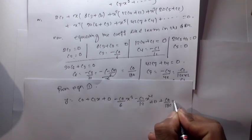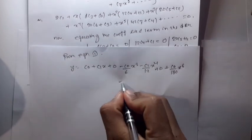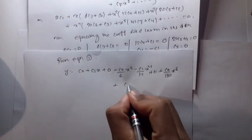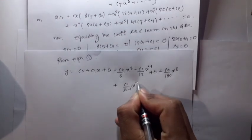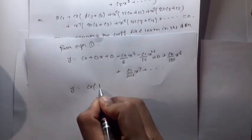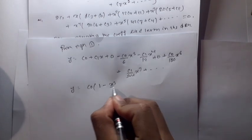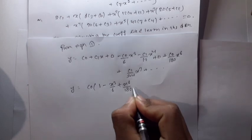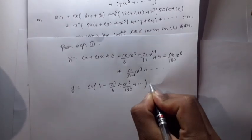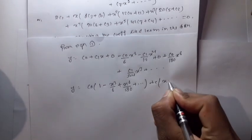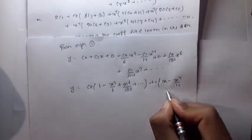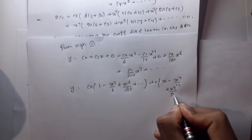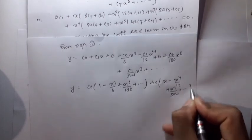Therefore, y is equal to c0 times (1 minus x cubed over 6 plus x to the 6th over 180 plus dot dot dot) plus c1 times (x minus x to the 4th over 12 plus x to the 7th over 504 plus dot dot dot). This is the required answer.